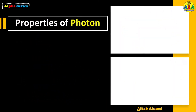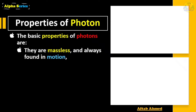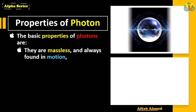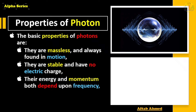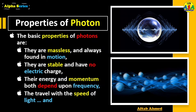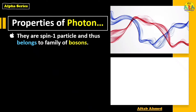The basic properties of photons are as follows: they are massless and always in motion — never at rest. They are stable and have no electric charge, meaning there is no electrostatic attraction or repulsion on them. Their energy and momentum both depend on frequency, and they travel with the speed of light, especially in vacuum.